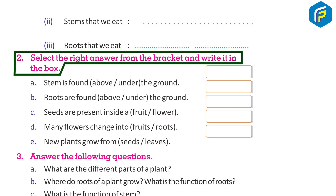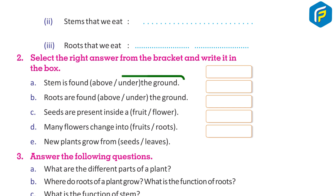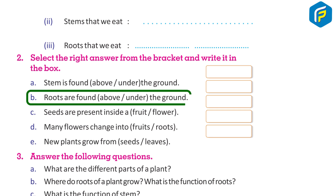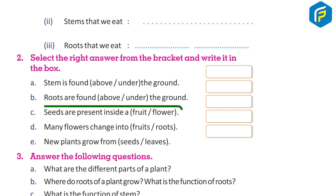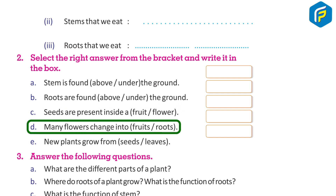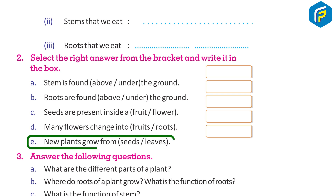Select the right answer from the bracket and write it in the box. A. Stem is found above/under the ground. B. Roots are found above/under the ground. C. Seeds are present inside a fruit/flower. D. Many flowers change into fruits/roots. E. New plants grow from seeds/leaves.